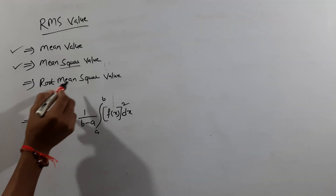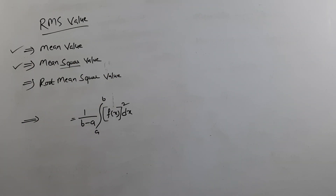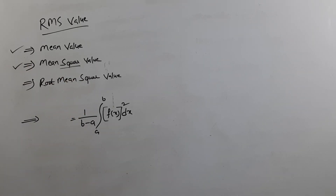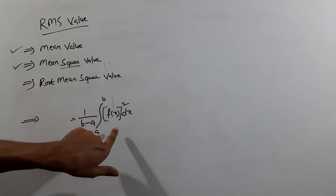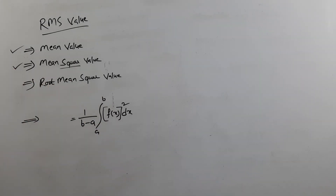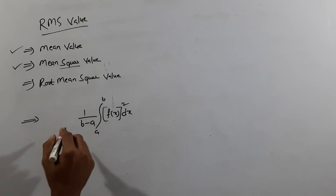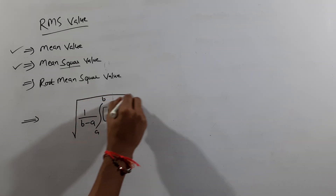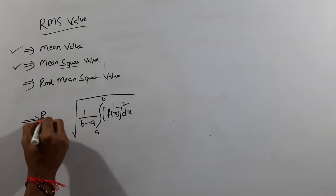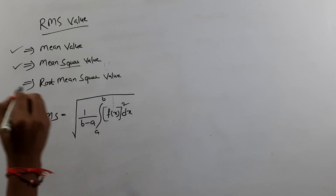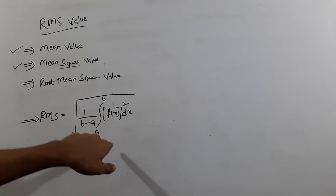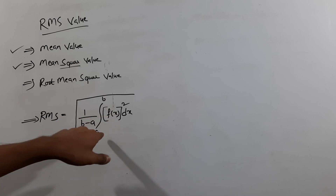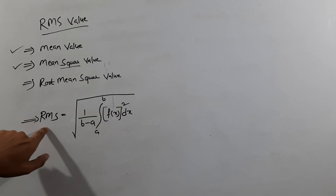Next is the root mean square value. In the mean square value, we add a square to the function. For RMS, we additionally take the root outside. So the RMS value formula is: root of 1 by (b minus a), integration of a to b, f of x all squared, into dx.